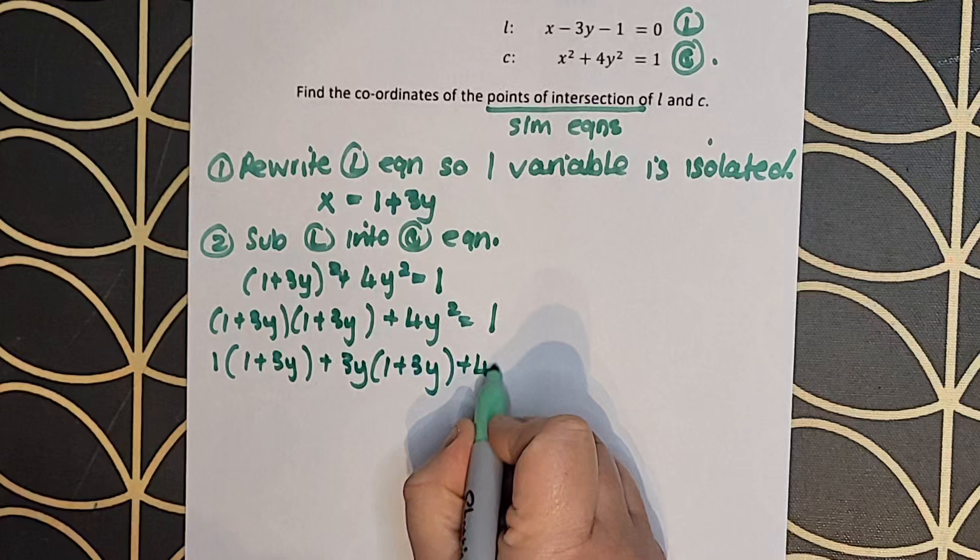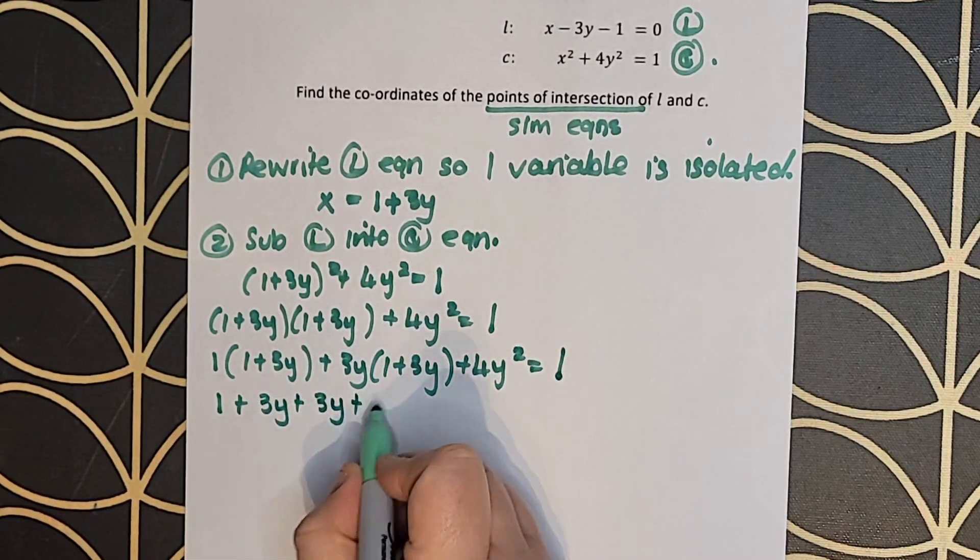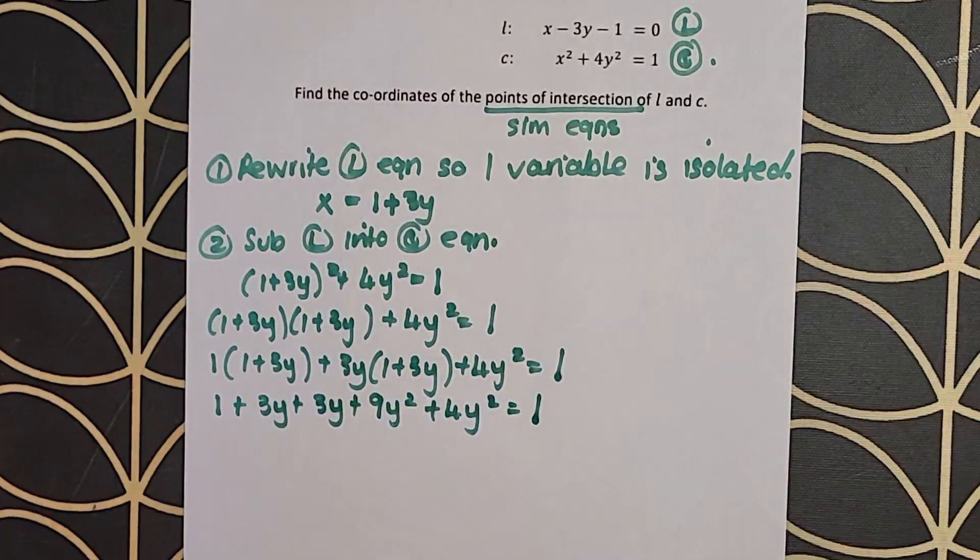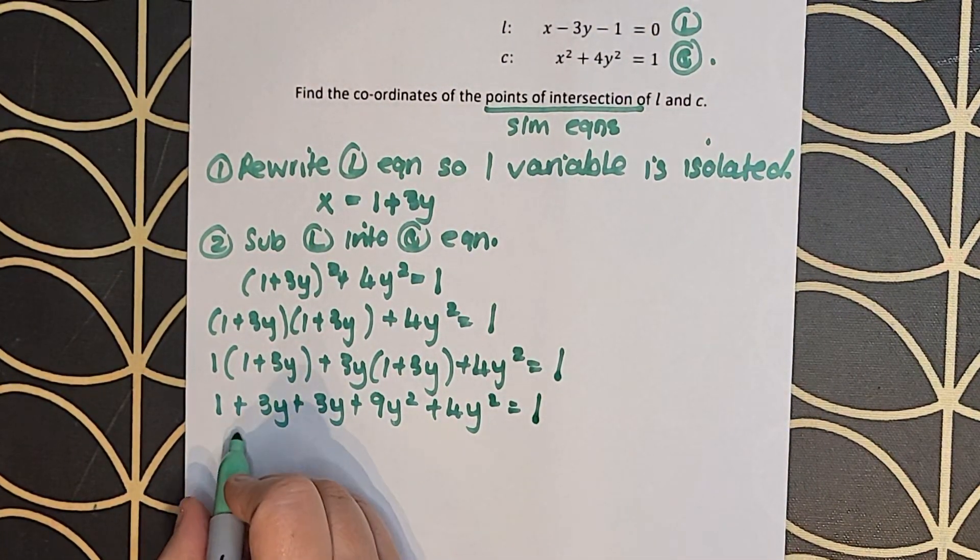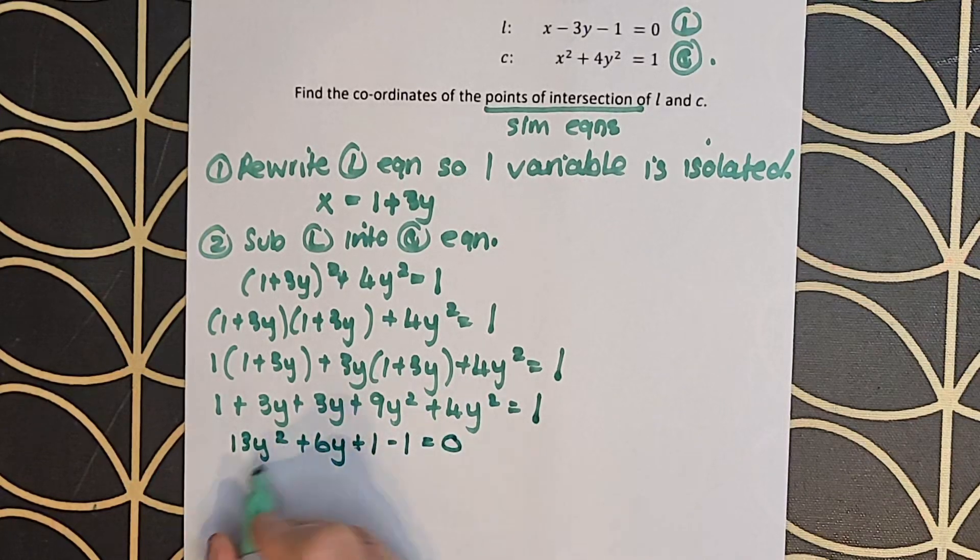I'm multiplying that in, working out all my brackets. I'm ending up with a quadratic equation with just y's and numbers, which is perfectly solvable for me. We end up with 13y squared plus 6y equals 0.